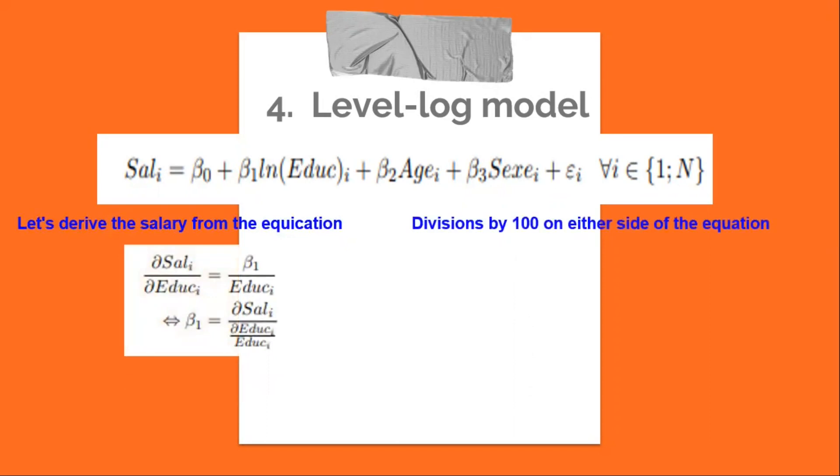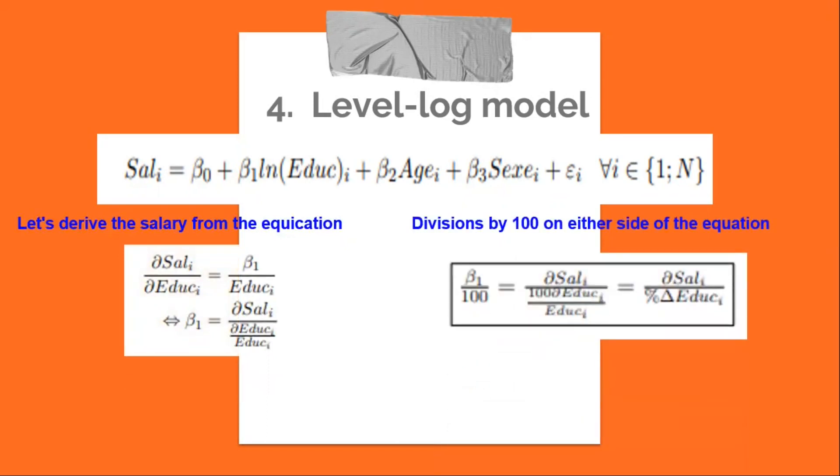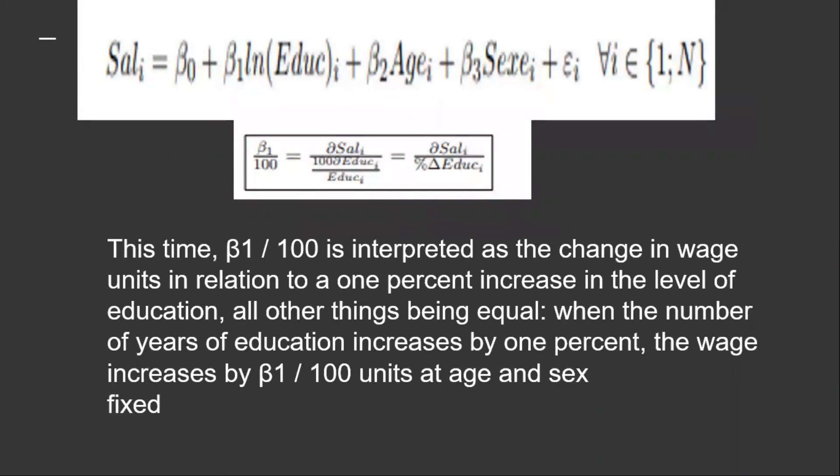Let's divide by 100 on both sides of the equation. This time, beta_1 divided by 100 is interpreted as the change in wage units in relation to a 1 percent increase in the level of education. All other things being equal, when the number of years of education increases by 1 percent, the wage increases by beta_1 divided by 100 units at fixed age and sex.